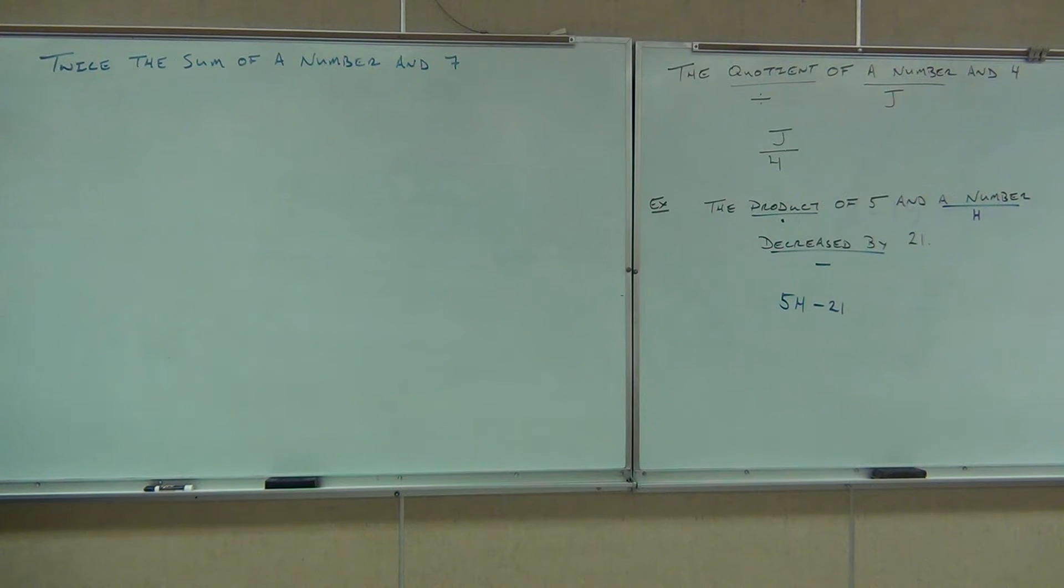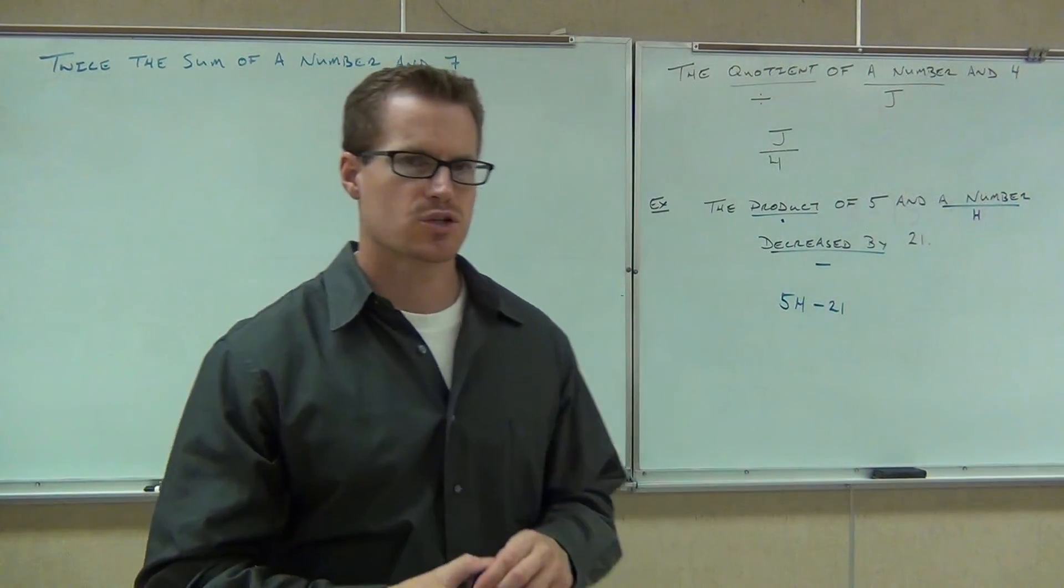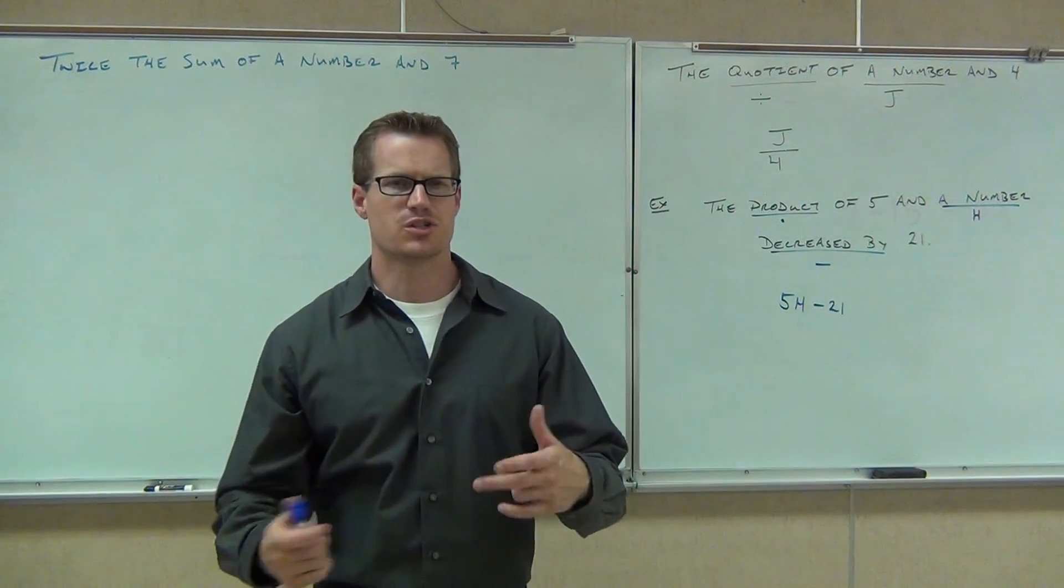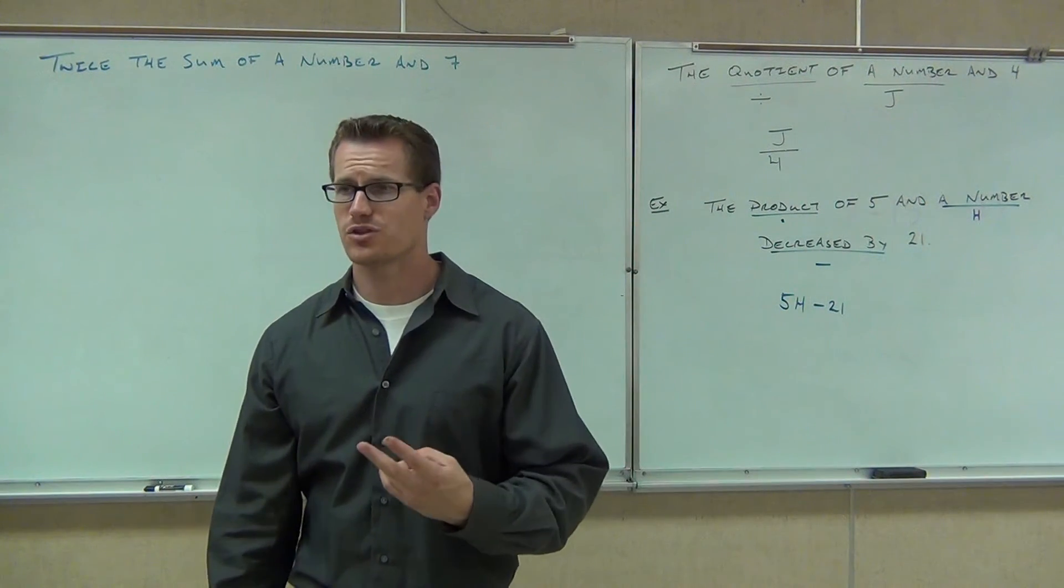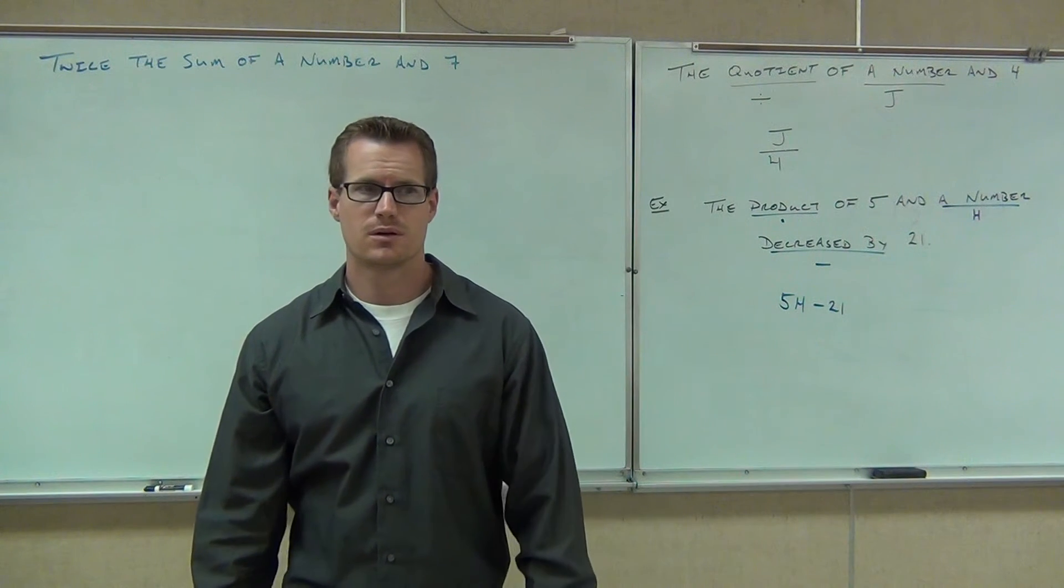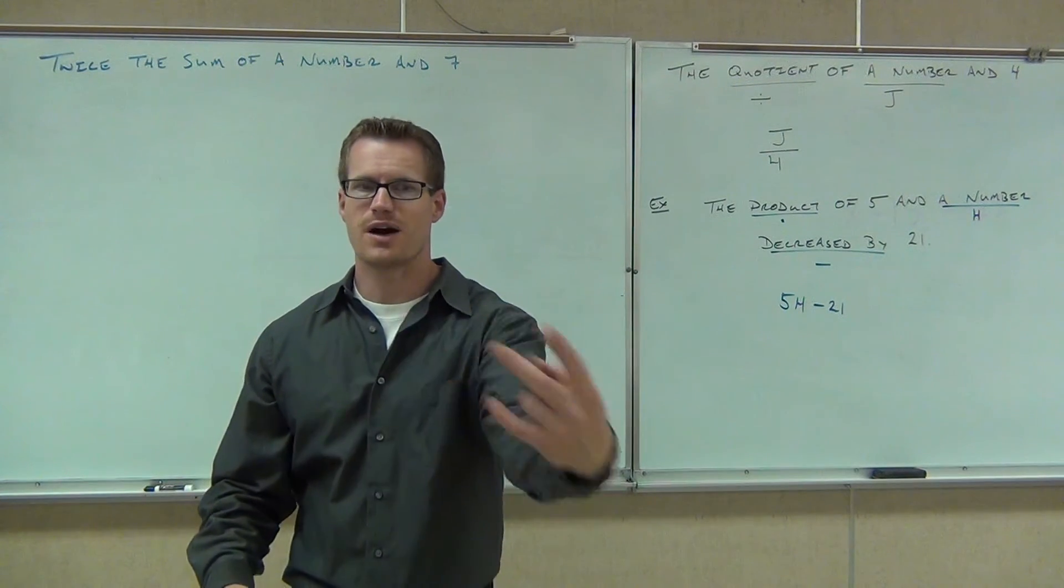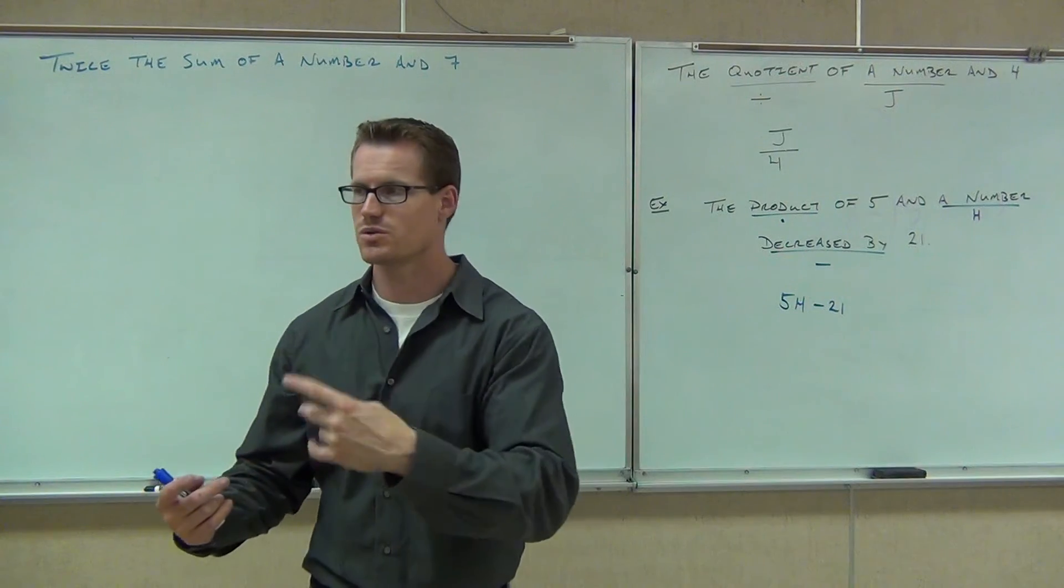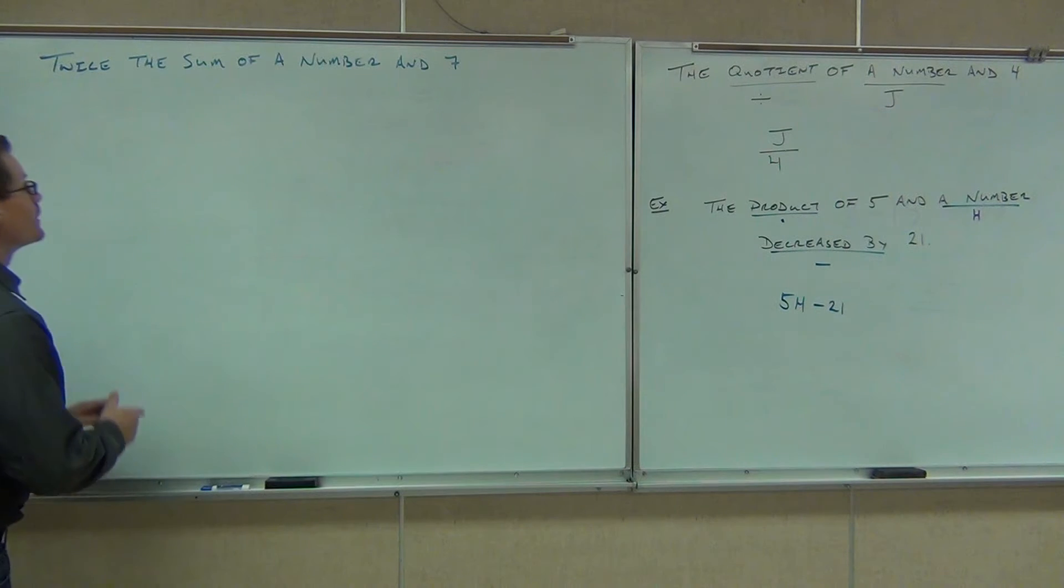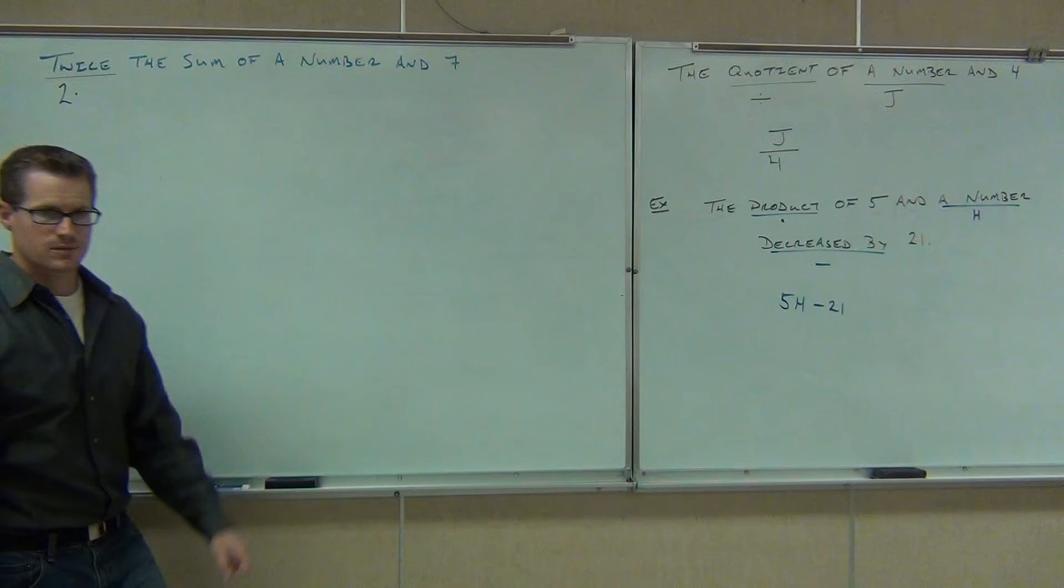Twice the sum of a number in seven. I'm going to help you out with this one because you might not know what twice means. Whenever you see twice, what number is associated with twice? Two. Two. So if I have twice five, how much is twice five? Squared. Not squared. Two times. Times two. So if I have twice five, it means I have five twice or ten. If I have twice 20, it means two times 20. So twice means two times.